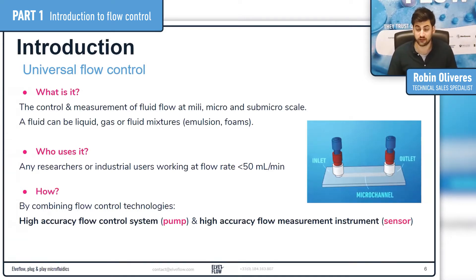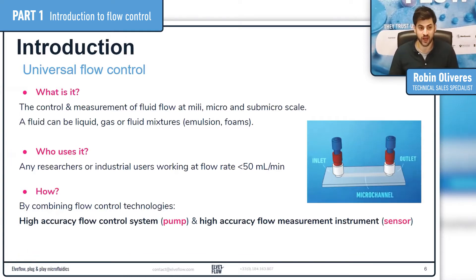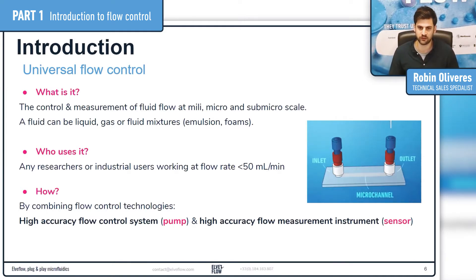Basically, who are the main users of this equipment? Overall, it's any researcher or industrials — people that are working at low flow rates, so below around 50 ml per minute, basically under laminar conditions.